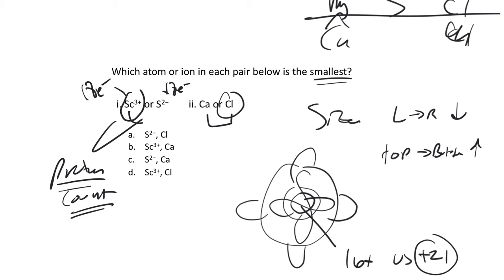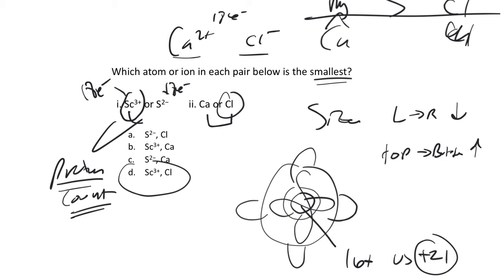Our answer is scandium 3+ and chlorine atom as the smallest. If you compare calcium 2+ and chloride ion, chloride goes bigger than chlorine, and calcium 2+ goes smaller, inverting their sizes. Comparing the common ions — both have 18 electrons — with 20+ versus 17+ nuclear charges, calcium flips to being smaller in its ionic form compared to chloride in its ionic form.